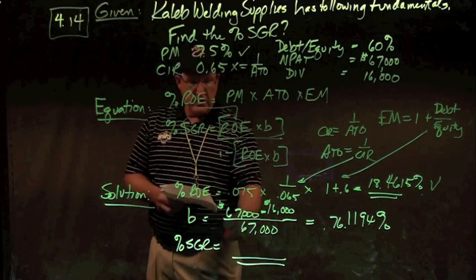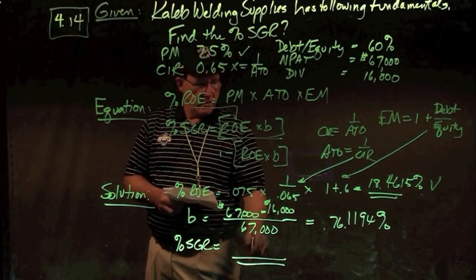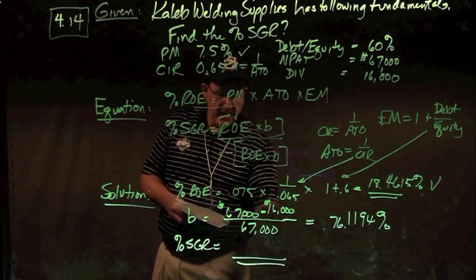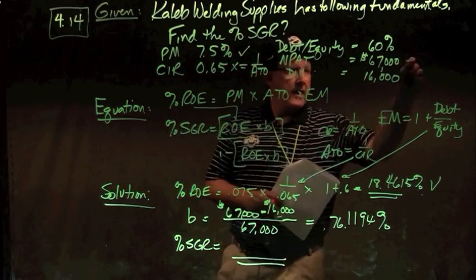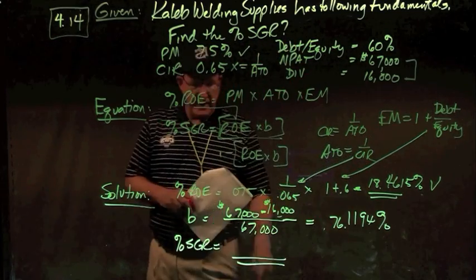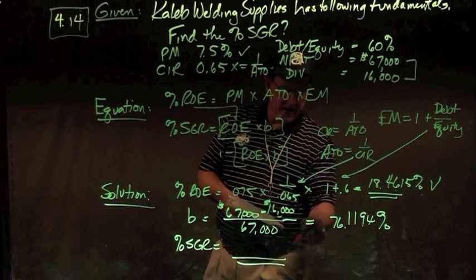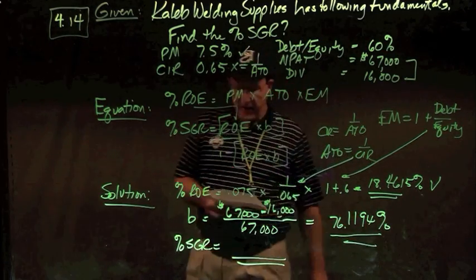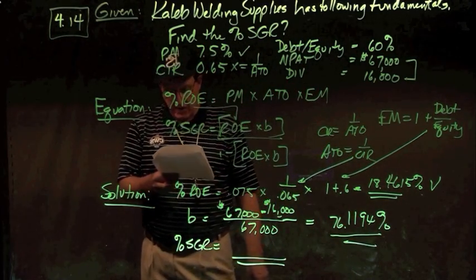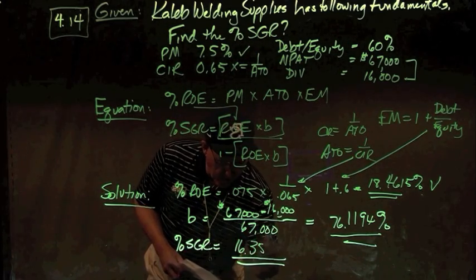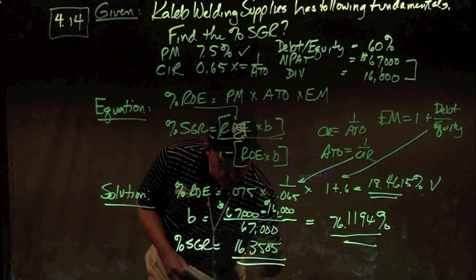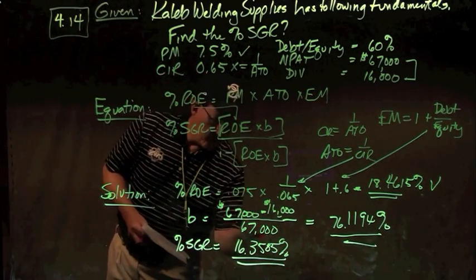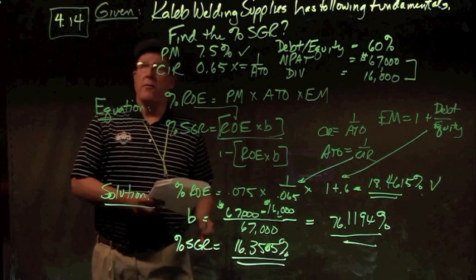Then I can plug that into the SGR equation, ROE 18.4615% times B. Now B is my net income minus my dividends. So I take my net income, subtract my dividends, and divide that by my net income, and I get a B, or retention ratio, of 76.1194%. Plugging that into the equation for SGR, I get an SGR of 16.3505%, and there's your answer to problem number 14.